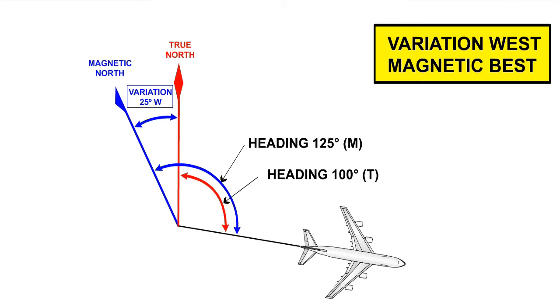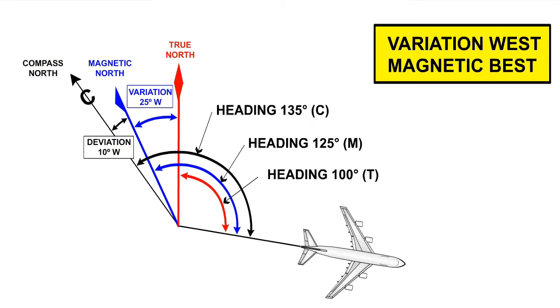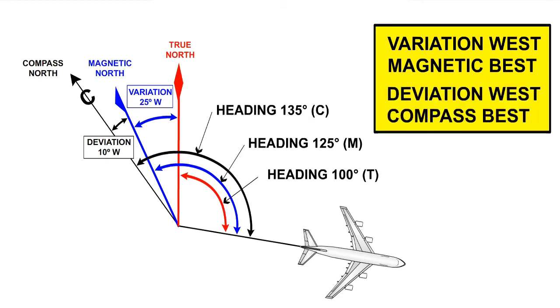Now suppose we have determined the deviation on an easterly heading to be 10 degrees west. In other words, compass north is 10 degrees to the west of magnetic north. We can see that the angle between the heading and compass north is another 10 degrees, so the compass heading would be 135 degrees. The deviation is west and the compass heading is best. In other words, more than magnetic.